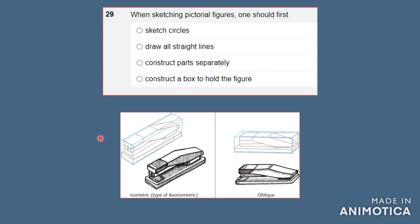Number 29: when sketching pictorial figures, one should first A) sketch circles, B) draw all straight lines, C) construct that separately, or D) construct a box to hold the figure. If you have a pictorial three-dimensional figure, the best thing to do before drawing it is to construct a box to hold the figure. That guides you when constructing irregular pictorial figures — it acts as a guideline to draw your figure proportionally.